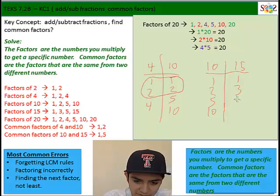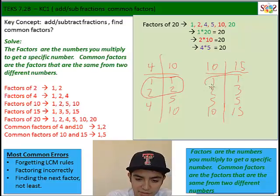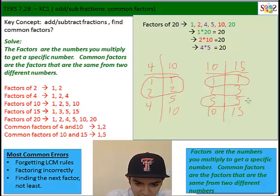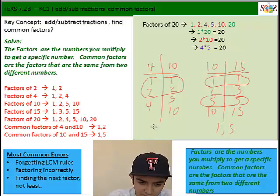And then for 15 it's going to be 1, 3, 5, and 15. So now here we can see that 1 is common between the two and then we also have 5. So the common factors here are going to be 1 and 5.